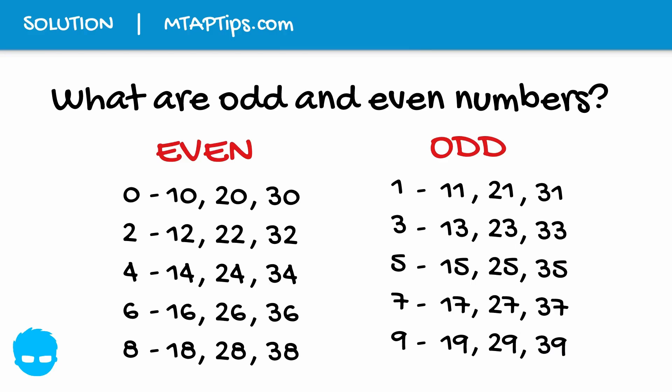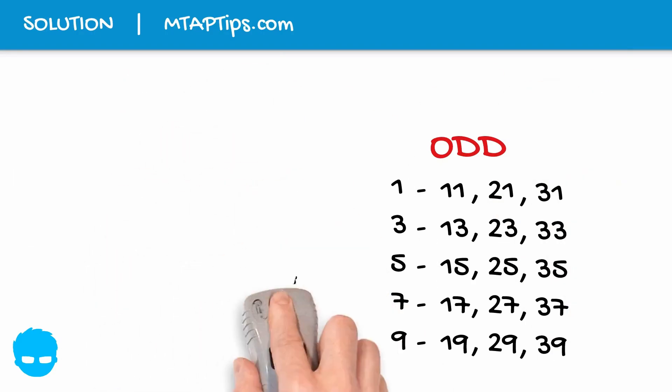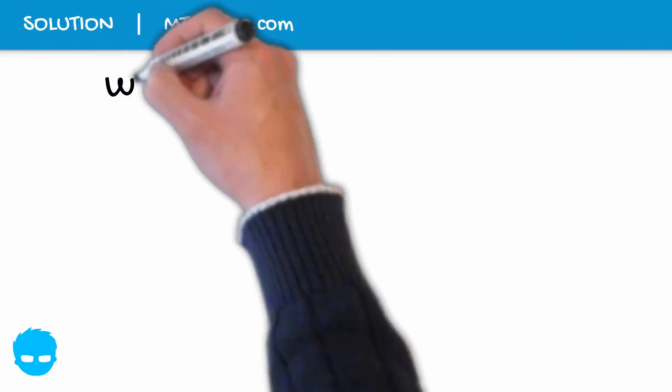Or we can simply say, even numbers are numbers that are multiples of 2 or numbers that can be divided by 2, while odd numbers are numbers that are not multiples of 2 and not divisible evenly by 2.